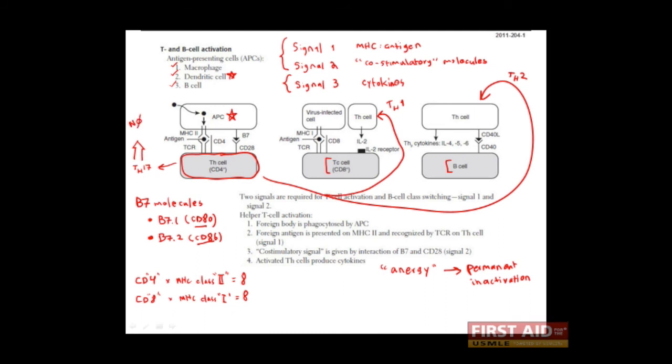The important thing to realize is that Th17 cells recruit neutrophils to the site of infection. This is particularly good when the pathogen is an extracellular bacteria or fungus. In that case, you want neutrophils infiltrating the infected tissue to phagocytose and destroy the extracellular pathogen.